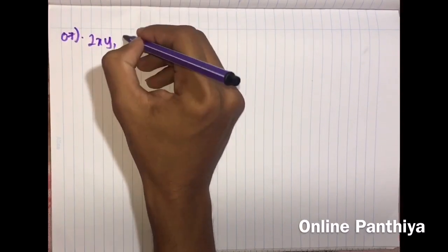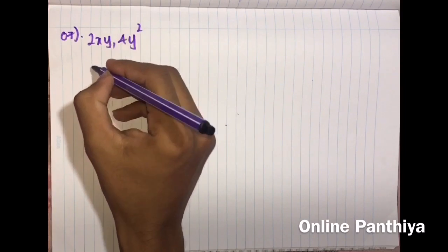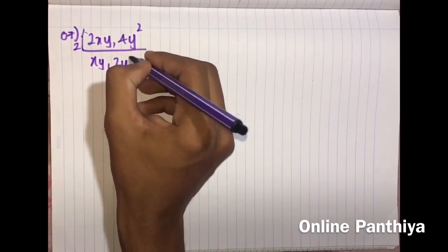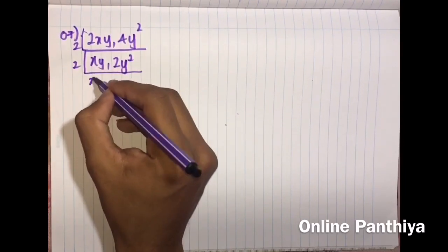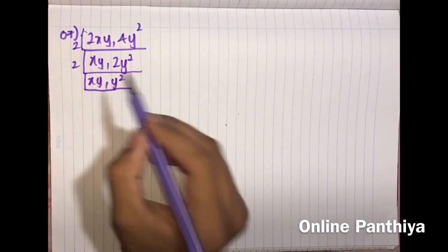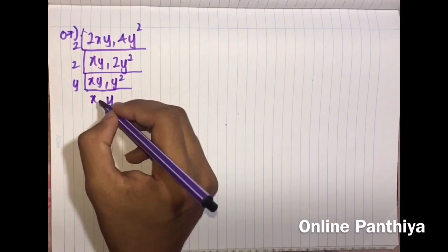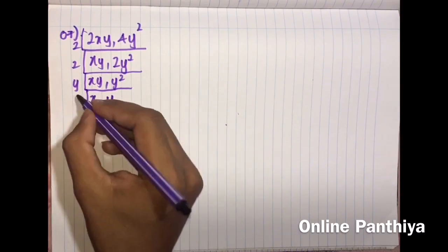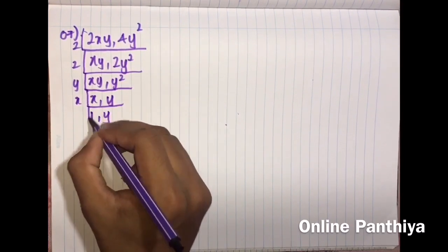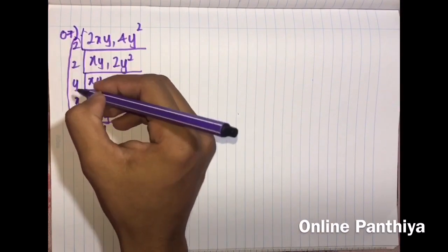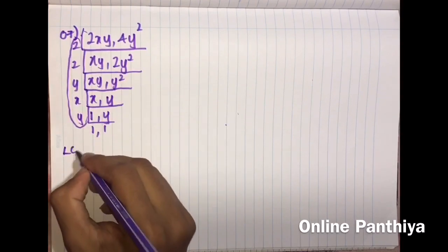Question 7: Find the LCM of two algebraic expressions 2xy and 4y squared. Using the LCM method, divide by the lowest prime number. Divide by 2 to get xy and 2y squared. Divide again by 2 to get xy and y squared. Then divide by y to get x and y. Divide by x to get 1 and y, then divide by y to get 1 and 1. The LCM is 2 × 2 × x × y² = 4xy².